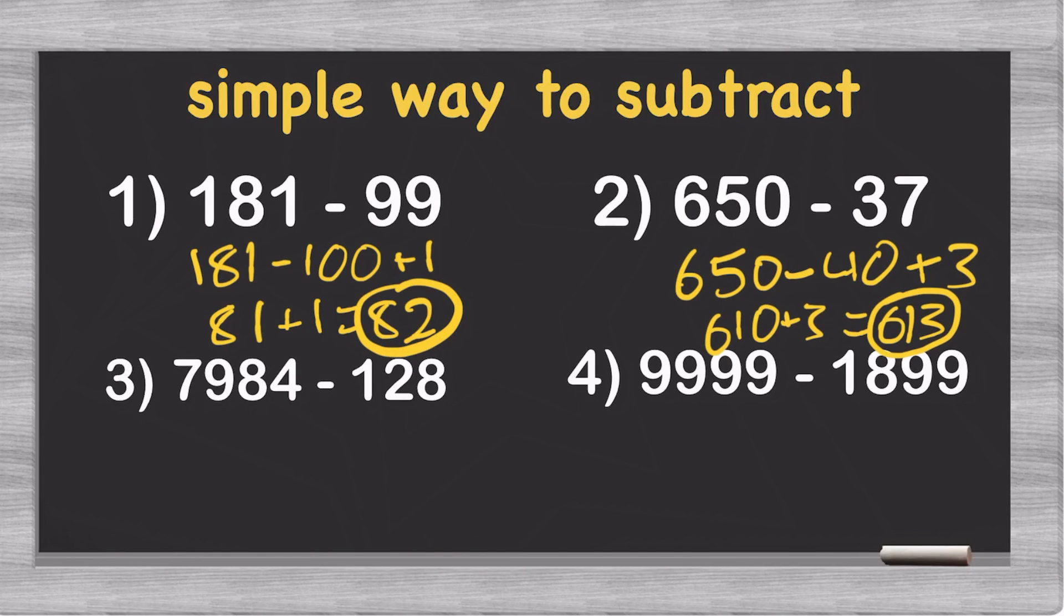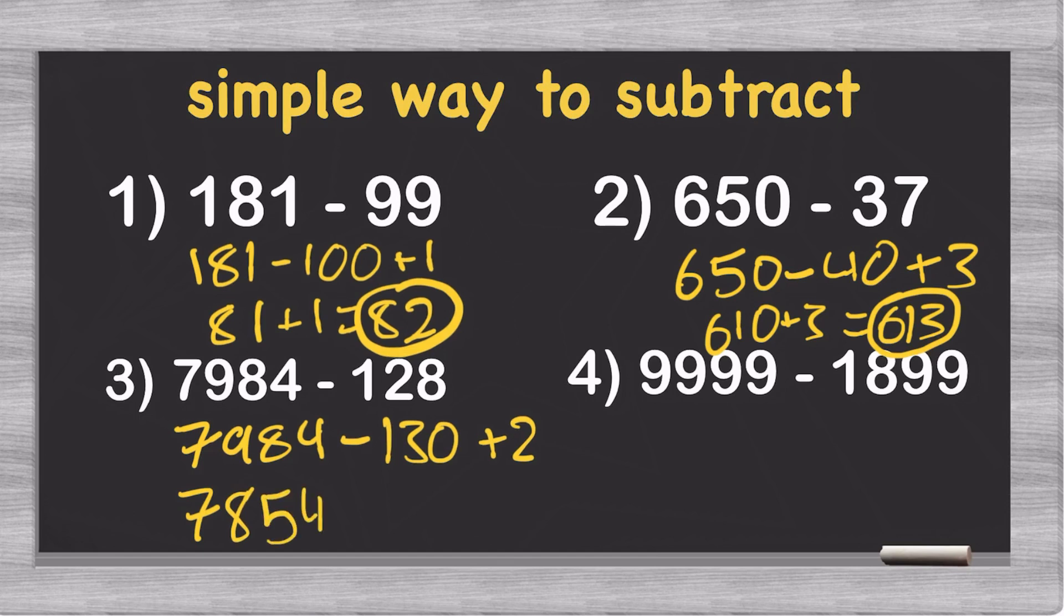And we can just keep going. For this third one, we can think of this 128 as 130 here, and then add 2. So if we do this, you will get, well, the 7 stays the same. 9 minus 1 gives you 8. 8 minus 3 gives you 5. And the 4 stays the same. So you get 7854. And then, once you add 2, you get 7856. Once again, the answer to this problem.